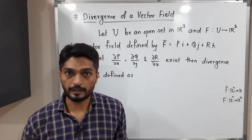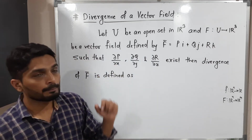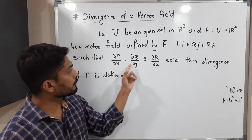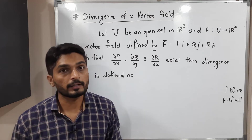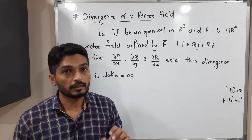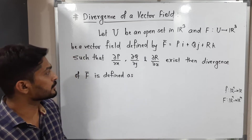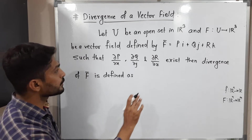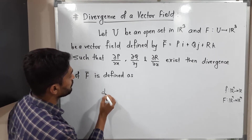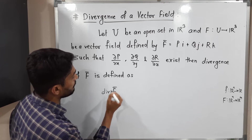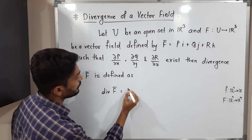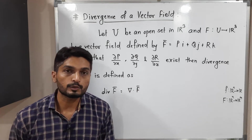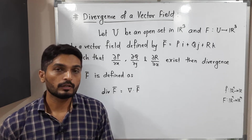An important condition is that the partial derivative of P with respect to x, the partial derivative of Q with respect to y, and the partial derivative of R with respect to z must all exist. Given this basic condition, the divergence of F is defined as: div F̄ = ∇ · F̄.